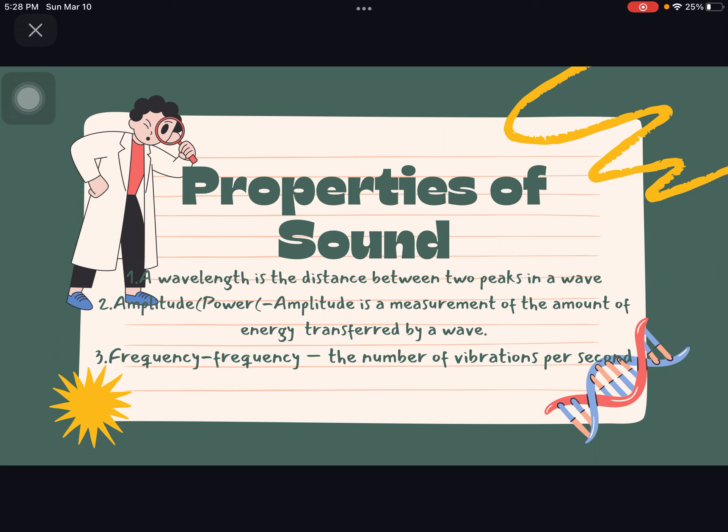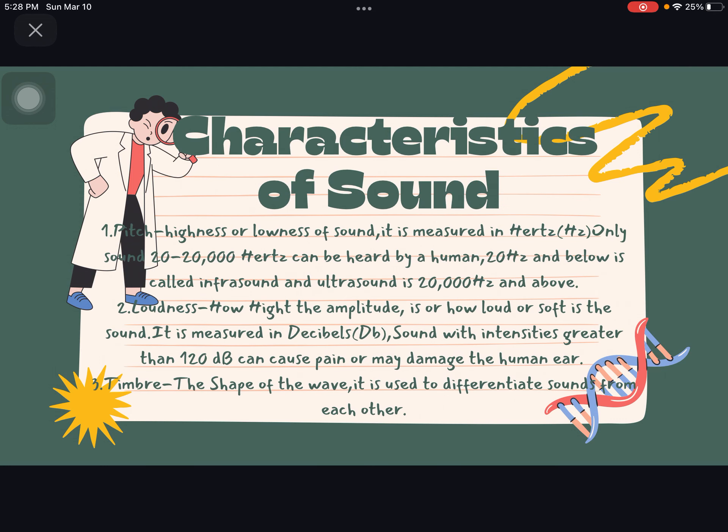Properties of sound. One, wavelength is the distance between two peaks in a wave. Two, amplitude, also known as power. Amplitude is a measurement of the amount of energy transferred by a wave. Three, frequency. Frequency is the number of vibrations per second.